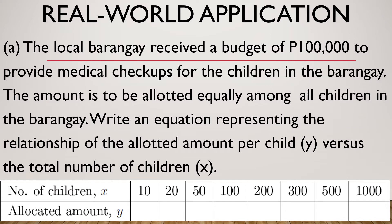So the question here is, how are we going to compute for y? And we all know that for us to compute for y, we must divide this, or it means y, the allotted amount per child, is equal to 100,000 over x.